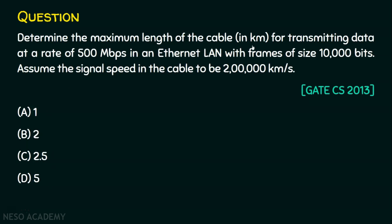Before solving this problem, let's analyze the given data. We are given three different data points. One is the data rate, that is the bandwidth. The second is the frame size, which is 10,000 bits or 10^4 bits. And the third is the signal speed or propagation speed, which is 2 lakh kilometers per second, in other words, 2 × 10^5 kilometers per second.